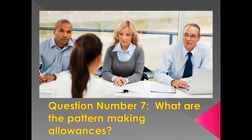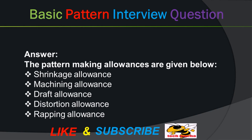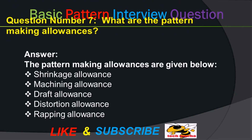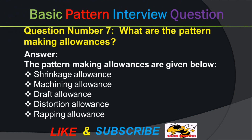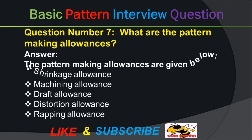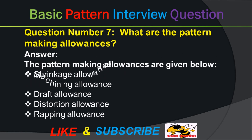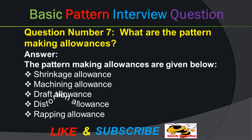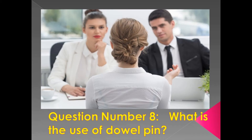Question number seven: What are the pattern making allowances? Answer: The pattern making allowances are: shrinkage allowance, machining allowance, draft allowance, and distortion allowance.